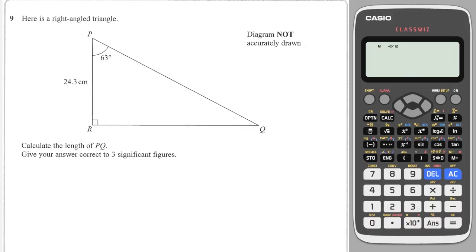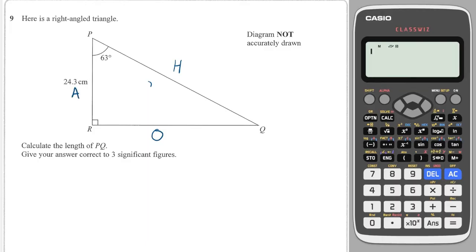First thing to do is to label the sides. There's the angle, so this is the opposite. There's the right angle, so that's the hypotenuse. And this therefore must be the adjacent. Now the sides that we're looking for are PQ, which is this one here, and we have the adjacent. So A and H means I need to use cosine.